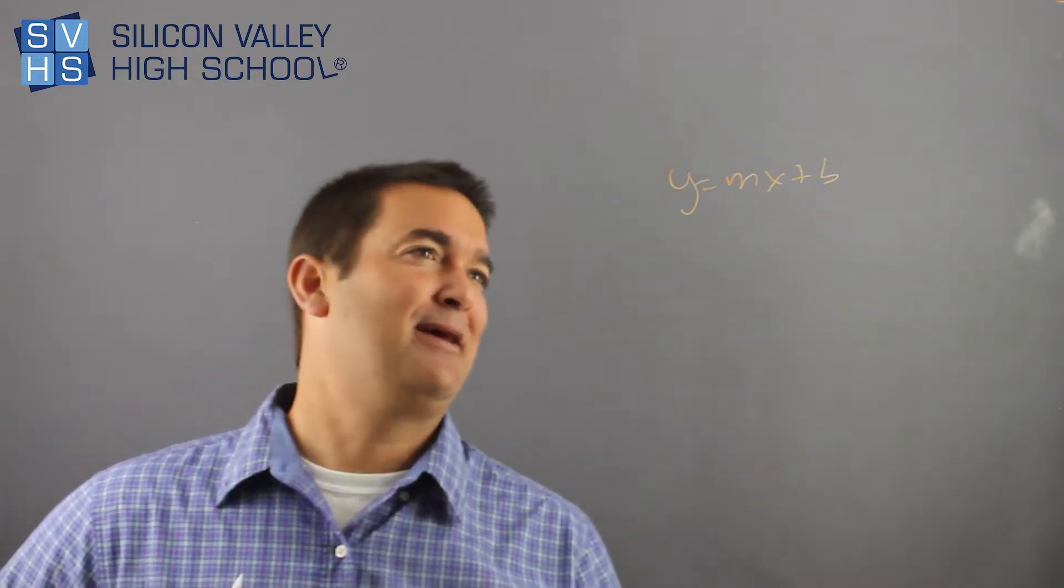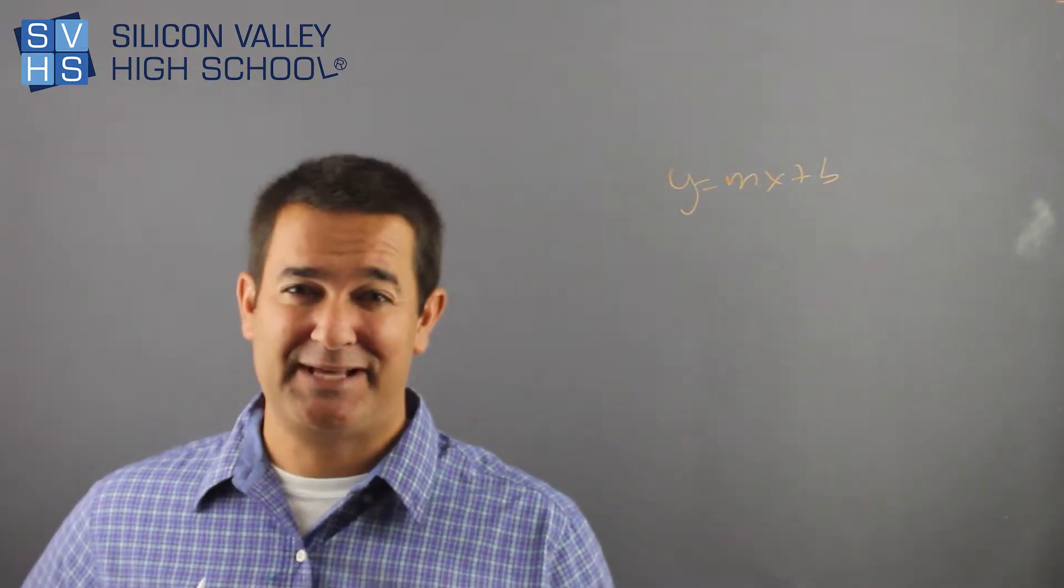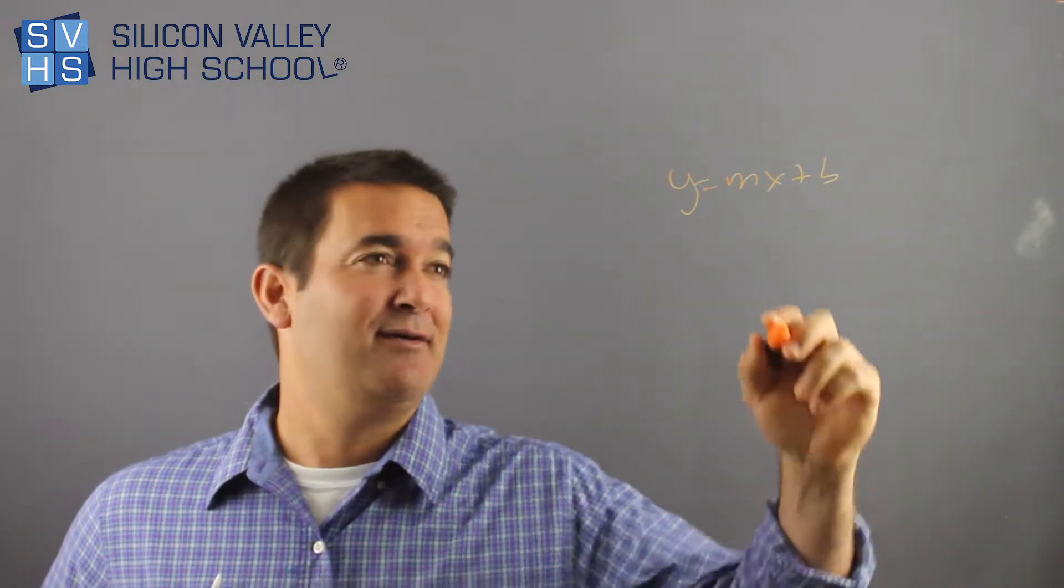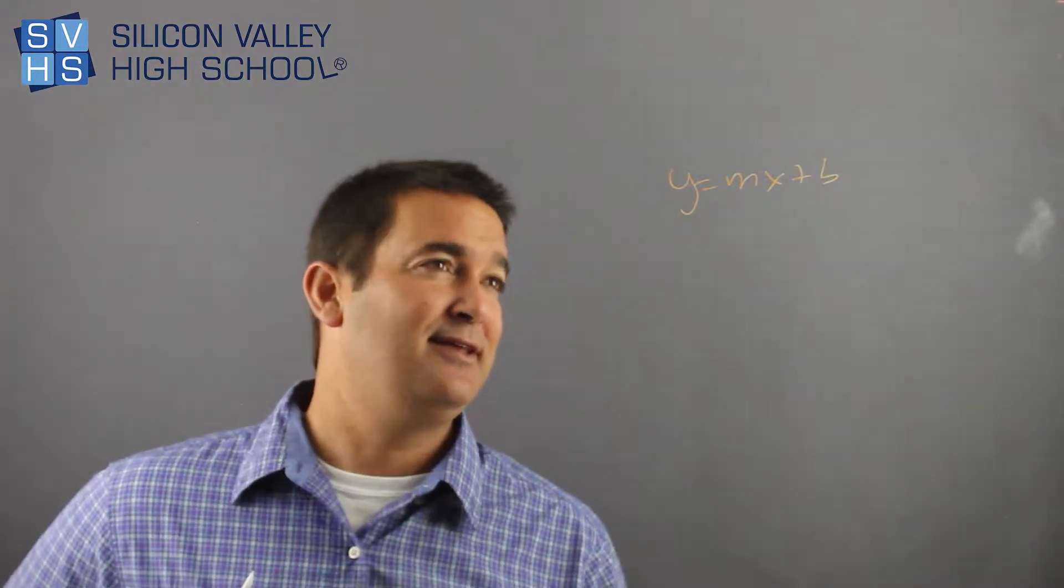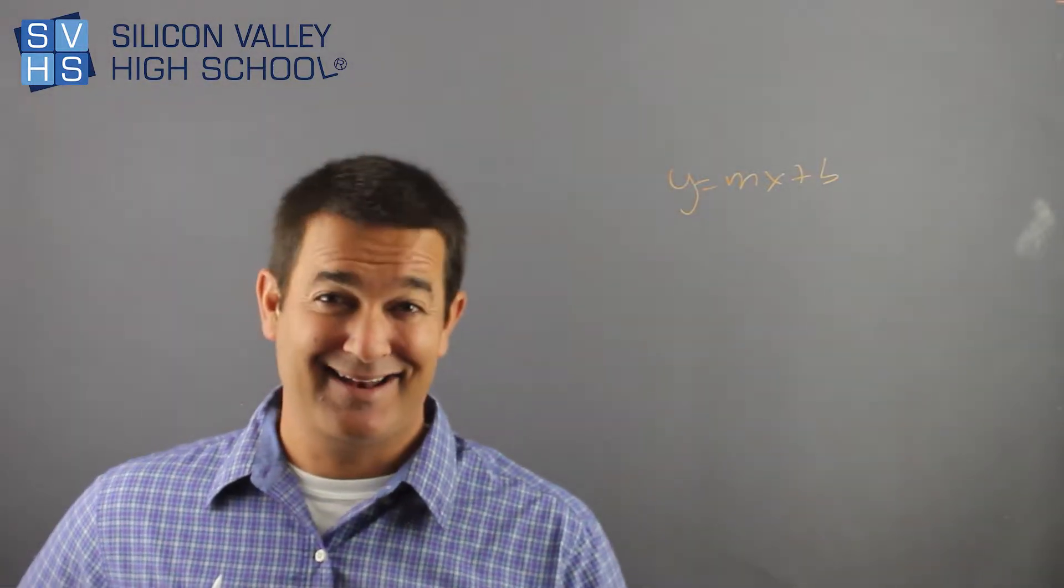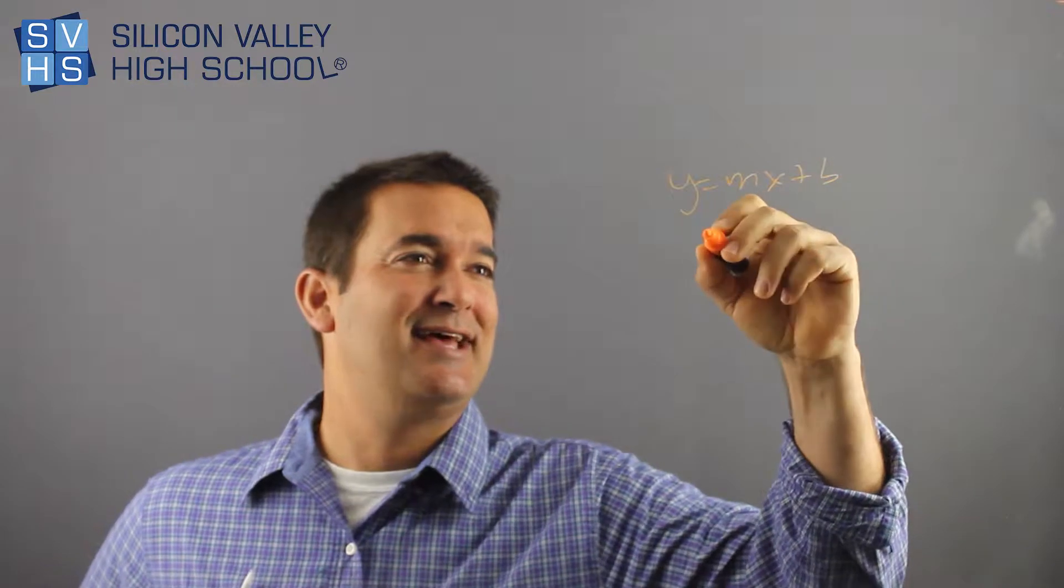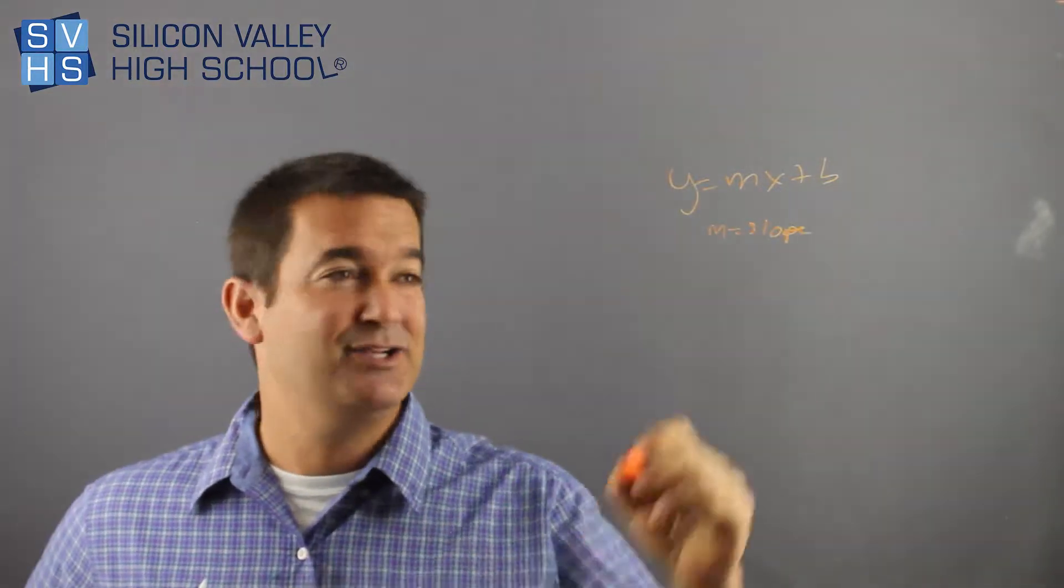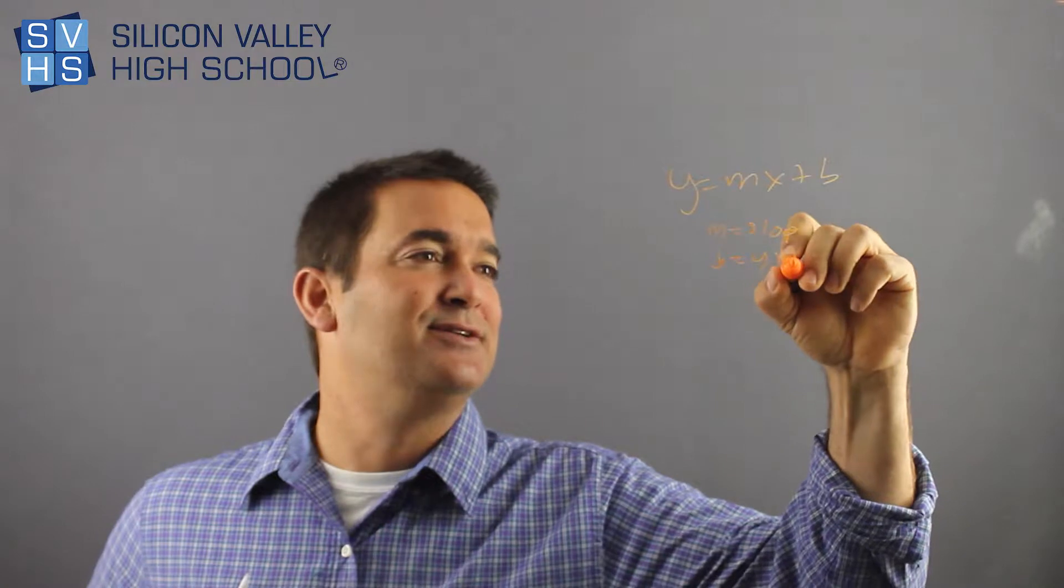This comes up: y = mx + b, which when you first hear this means absolutely nothing to anybody, right? But this is the equation for a line. m is slope, or kind of like rate of change, and then b is the y-intercept. After you do like 10,000 of these, you'll get it.